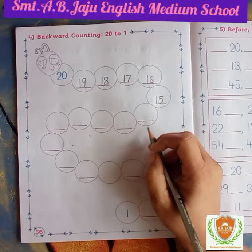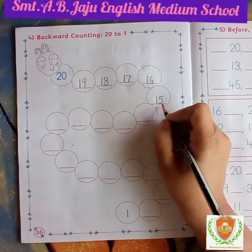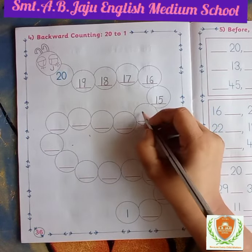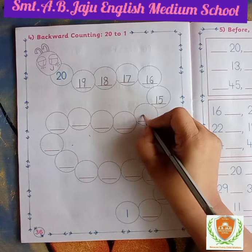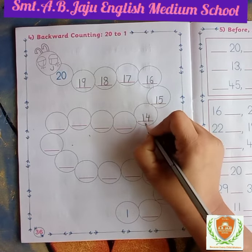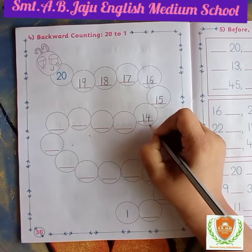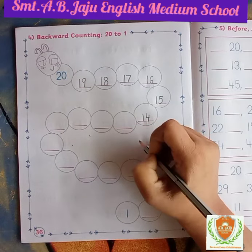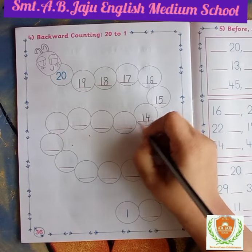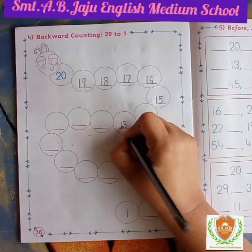After 15, which number will become in backward? Write 1, then write down 4 — that is 14. After 14, which number will become? 13. Write 1, then 3 — that is 13.